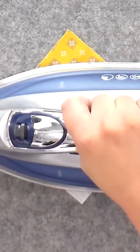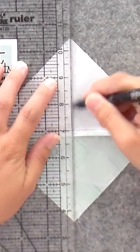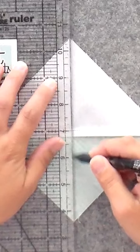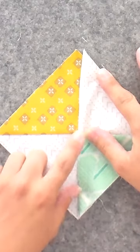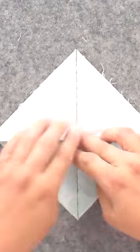Press the seams to the dark side but do not trim. Draw a line from corner to corner across the seam on the wrong side of two half square triangles and pair them right sides together with the other HSTs, nesting the center seams.